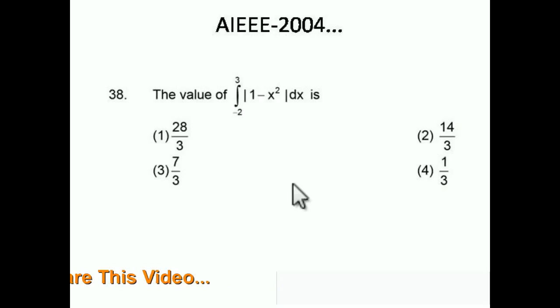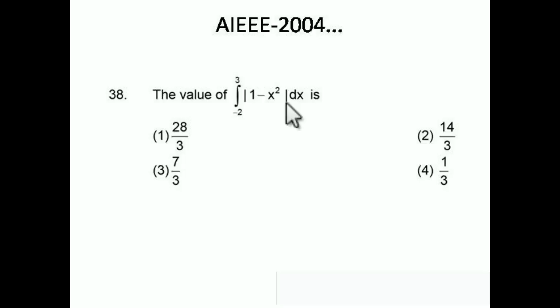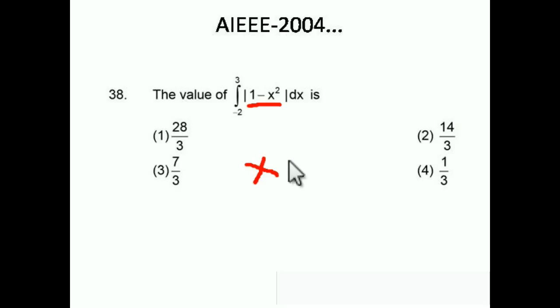This is a very good question — please solve this type seriously. We have the integral of |1 − x²| dx from −2 to 3. Whenever a modulus appears, always think about the points where the expression inside becomes zero. Setting 1 − x² = 0 gives x = ±1.